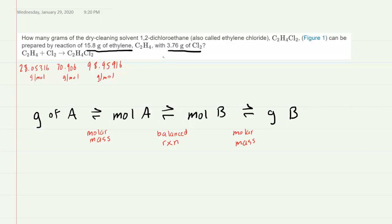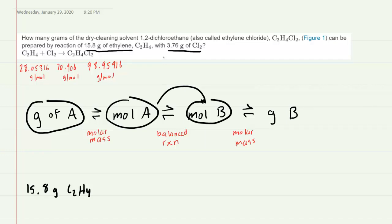Let's start out with the 15.8 grams of ethylene, C2H4. And what we're doing in this roadmap is we're starting on the far left side. We're starting with grams of a substance called A. And what we'll do is convert the grams of that substance into the moles of the same substance using the molar masses that we just determined. Then, once we have the moles of that substance, we will convert the moles into the moles of a different substance that we've called B. And for that, we'll use the balanced reaction. And then finally, we can convert the moles of that new substance B into its grams.